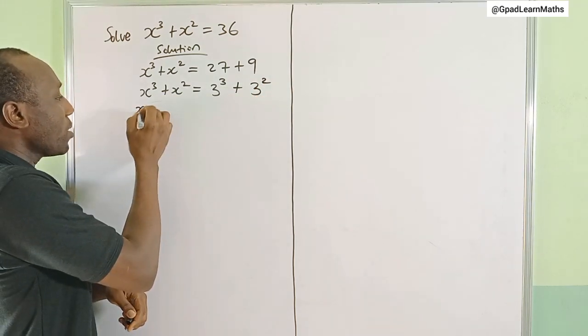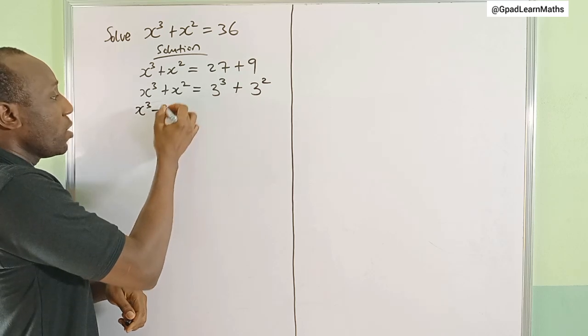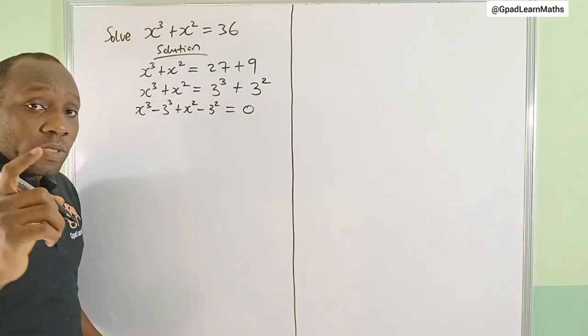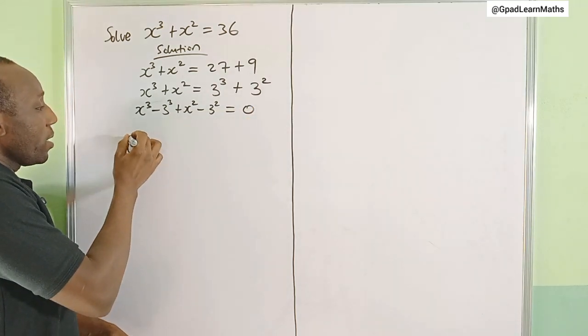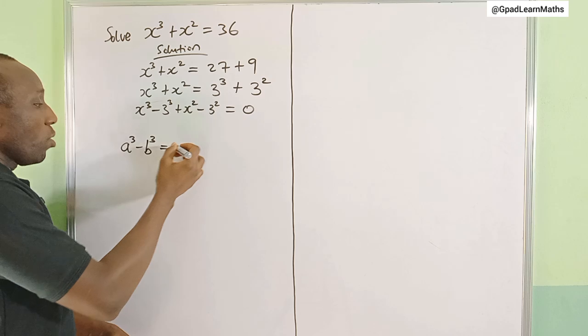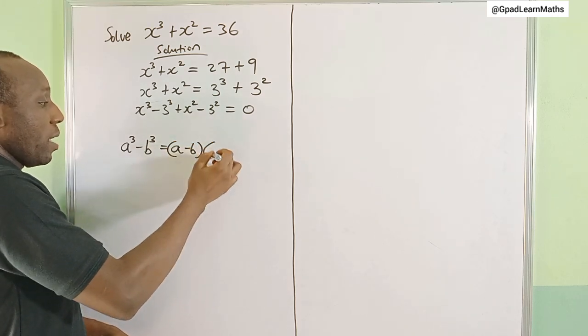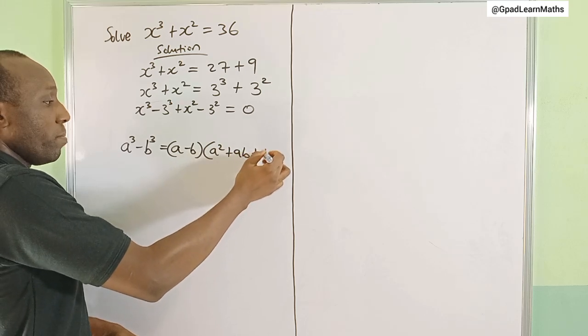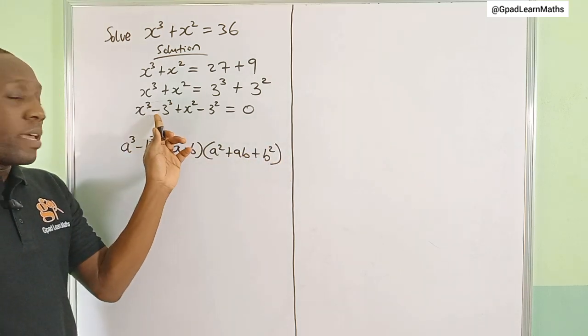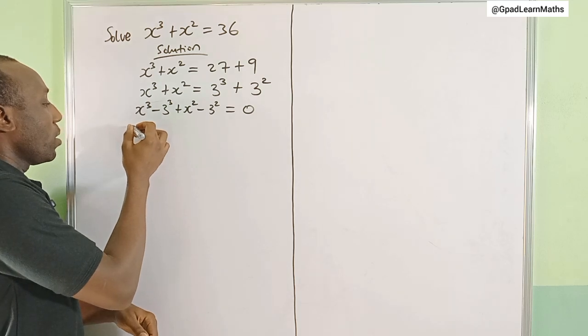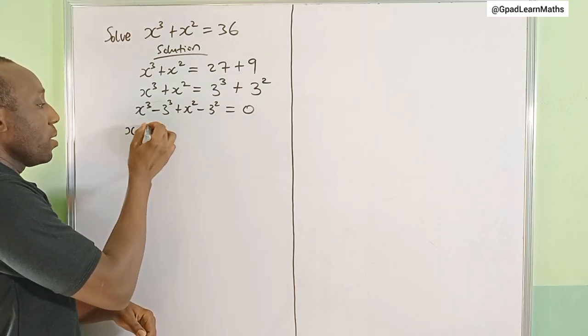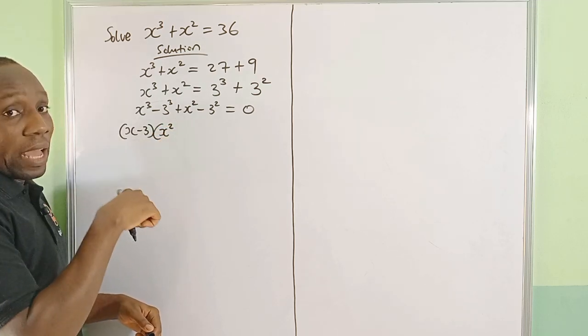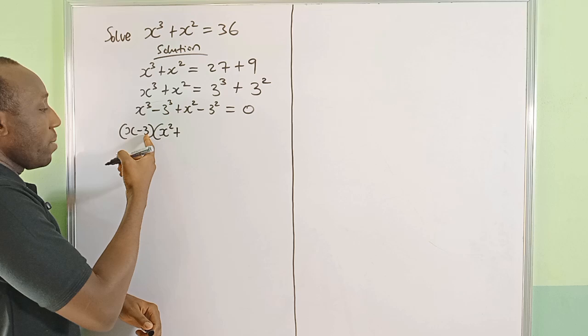Using algebraic identities, a³ - b³ = (a - b)(a² + ab + b²). This is what I'm going to use on this one. That will give us (x - 3)(x² + 3x + 9).